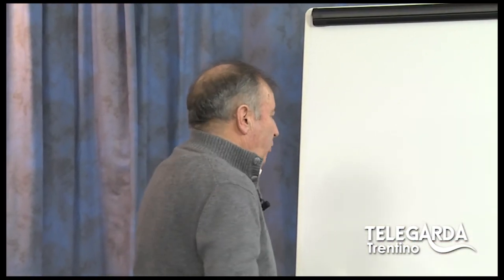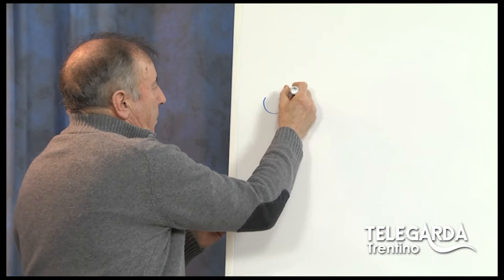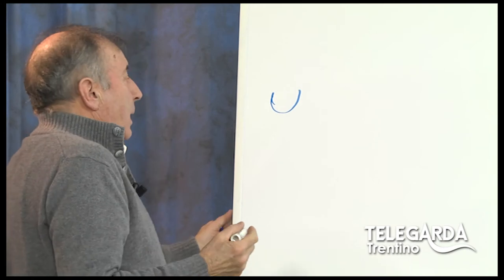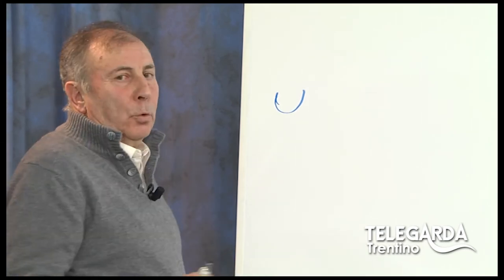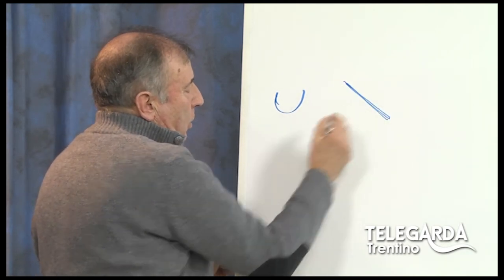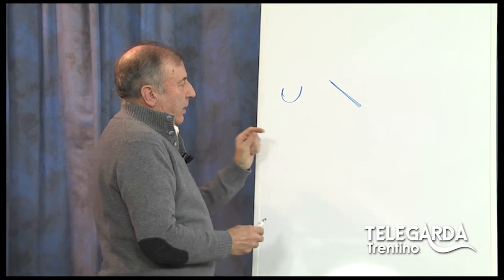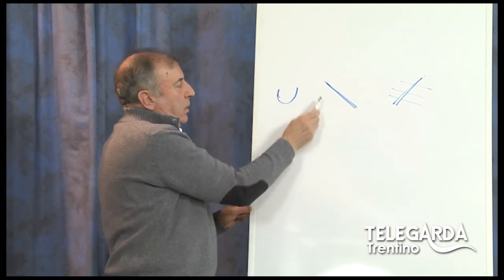Una cosa importantissima: l'accento tonico nella lingua italiana — cioè l'accento della voce — generalmente quando si scrive, lo si scrive così, una specie di coppetta. Questo nella scrittura a mano. Perché oggi con qualsiasi tastiera, delle vecchie macchine da scrivere o dei computer moderni, l'accento tonico lo trovate scritto così — parte dall'alto a sinistra e scende verso destra. Ce n'è un altro tipo, ma questo non c'entra con l'accento tonico.